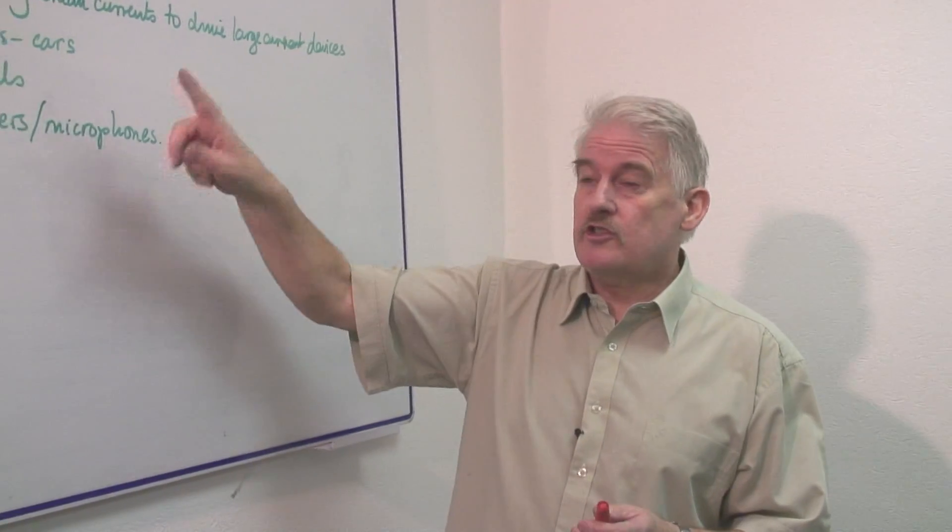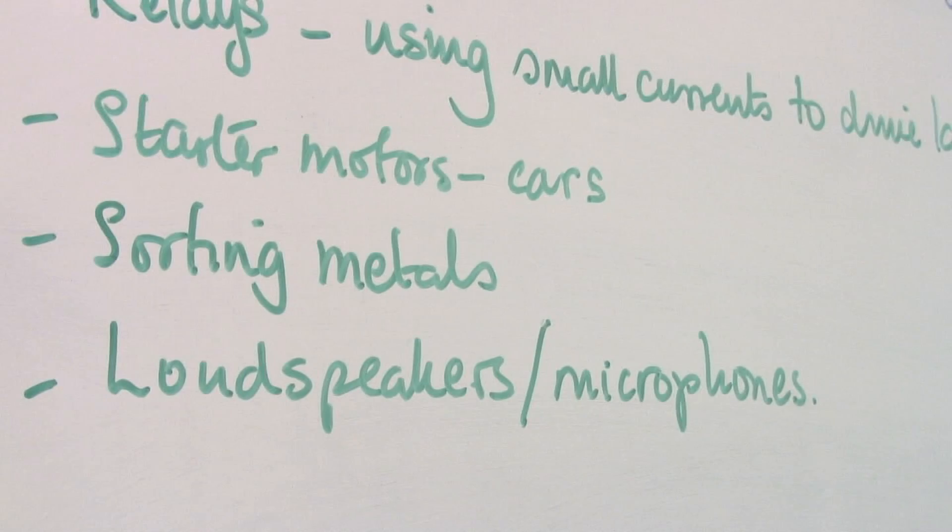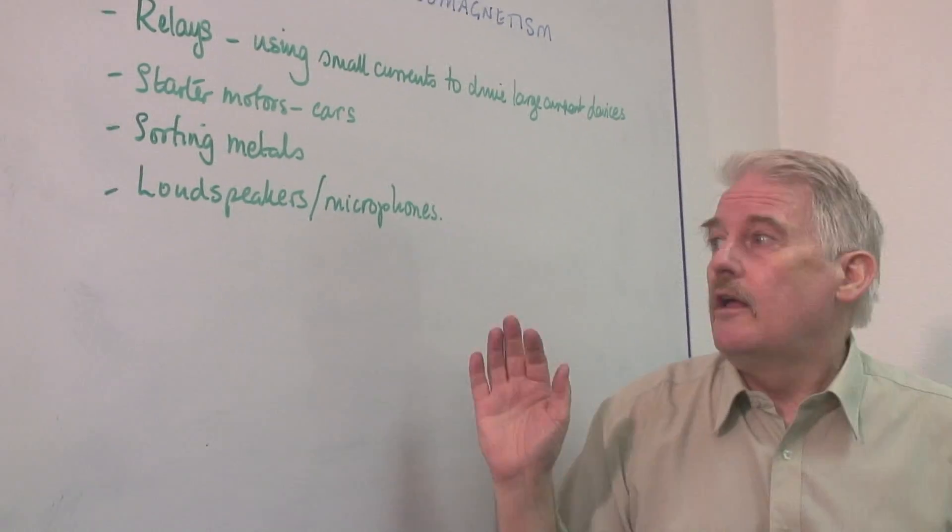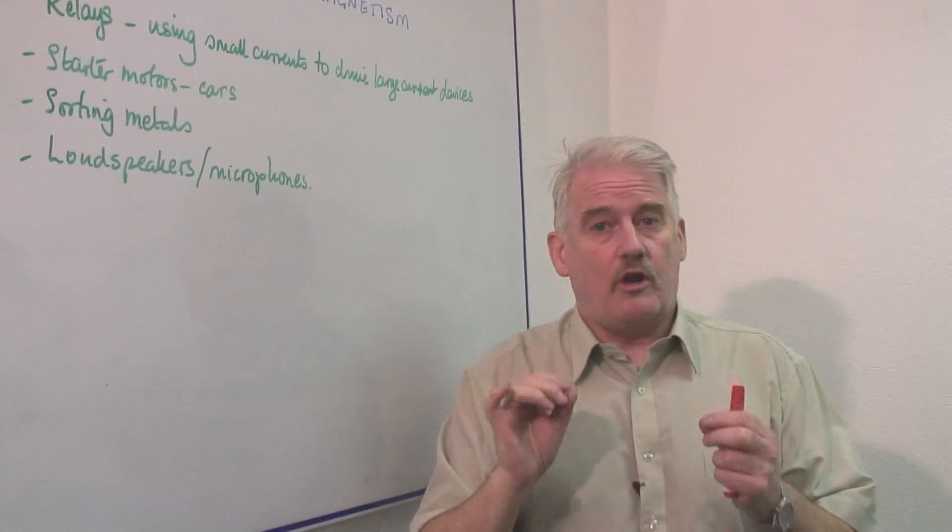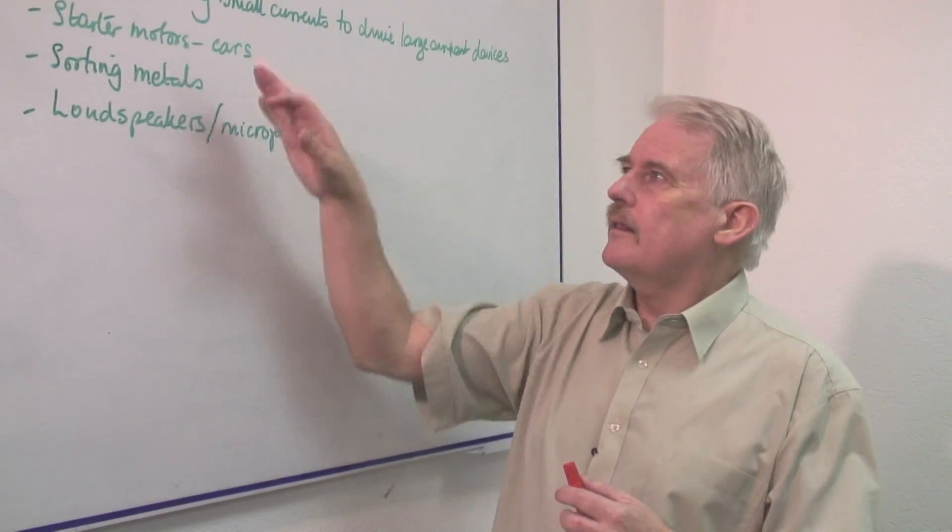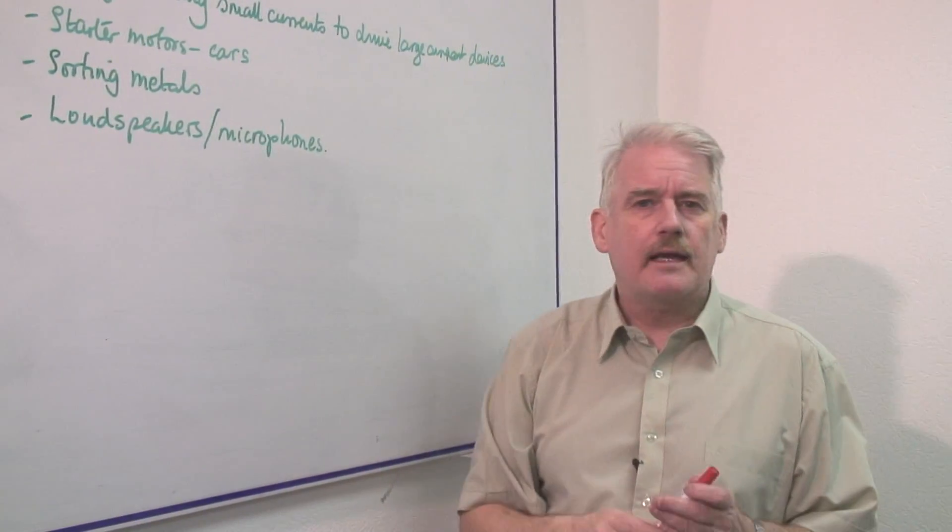But there are certain things which are extremely useful. For example, a loudspeaker or microphone which doesn't use electromagnetism is quite unusual. Although smaller and smaller devices are being produced, and these are getting less and less electromagnetic in character.